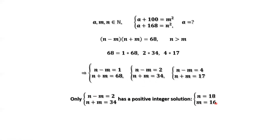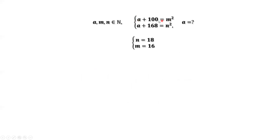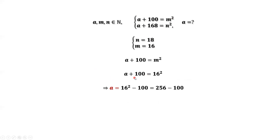Now, what is our question? We want to find A. How do we find A? We already have the result for N and M. Using the first given condition and replacing M by 16, we have this equation. Solving it by moving 100 to the right-hand side, the final answer for A is 156.